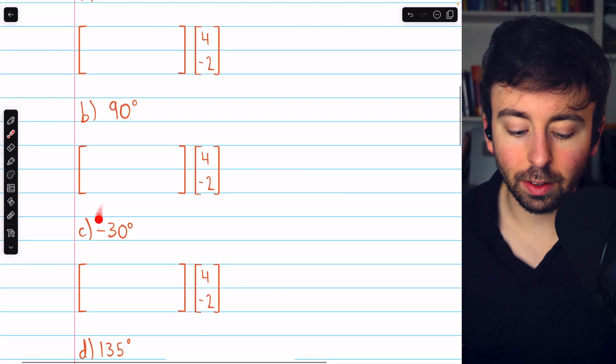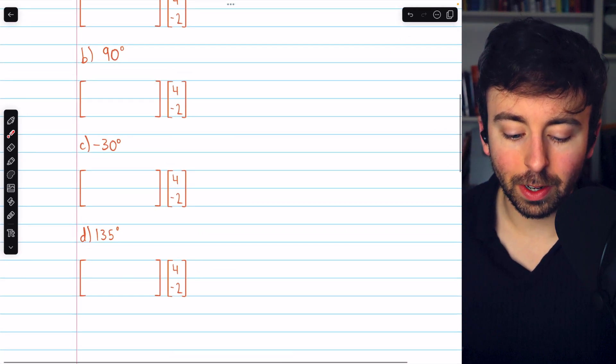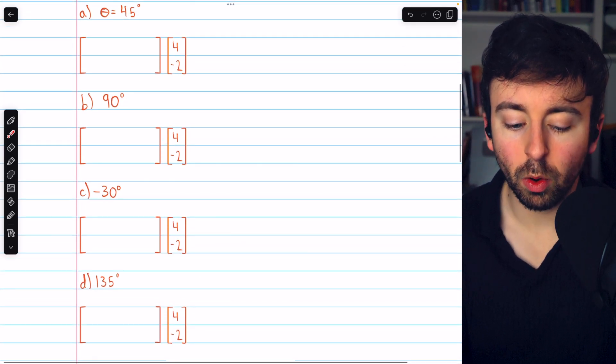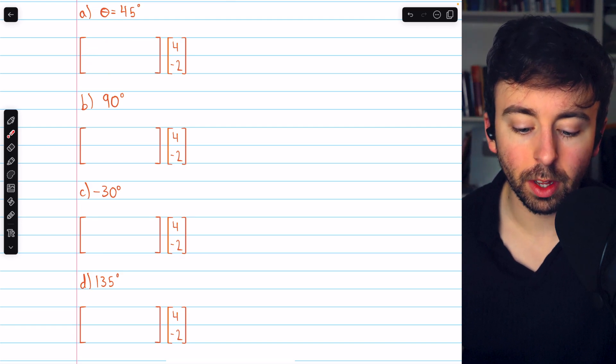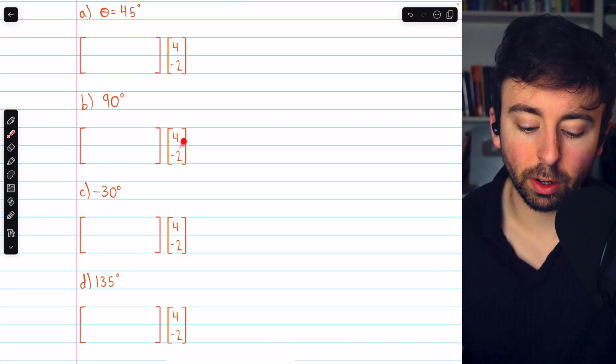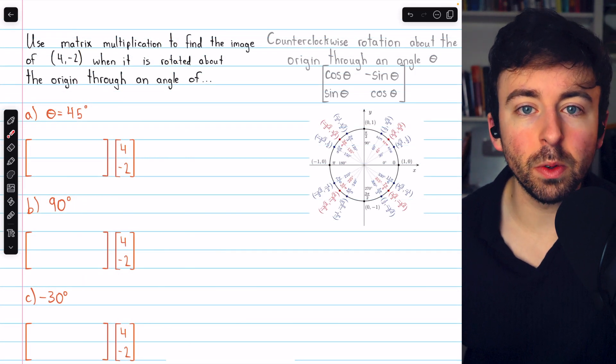90 degrees, negative 30 degrees, and 135 degrees. I've already set us up in each problem. We're going to have the standard matrix for the matrix transformation of rotation, and we're going to multiply it by the vector in question, (4, -2).